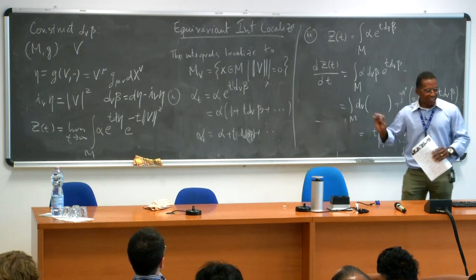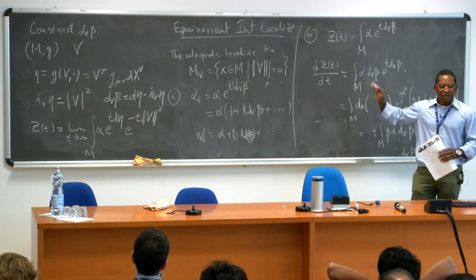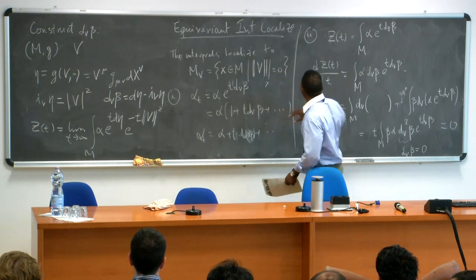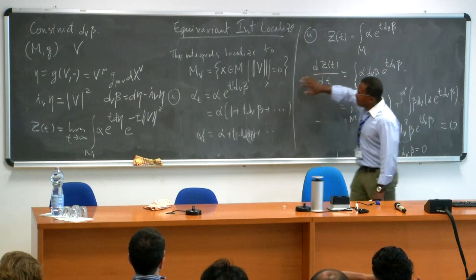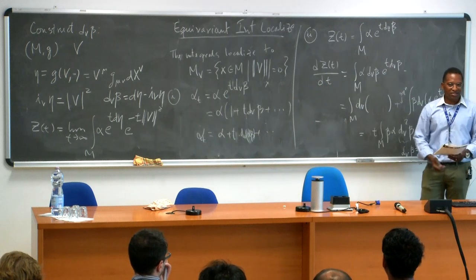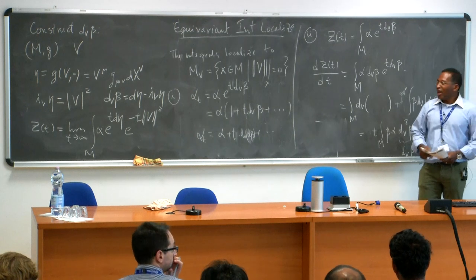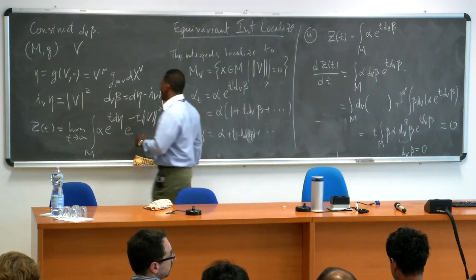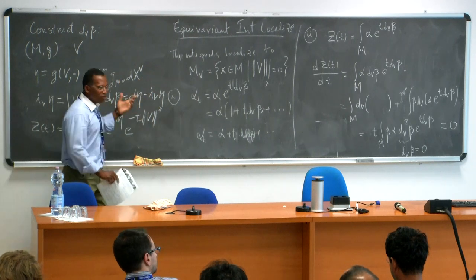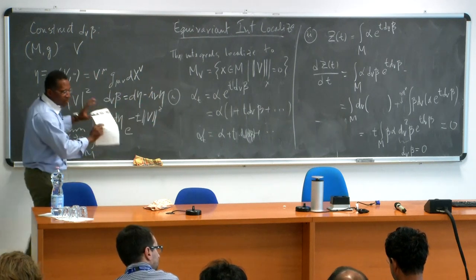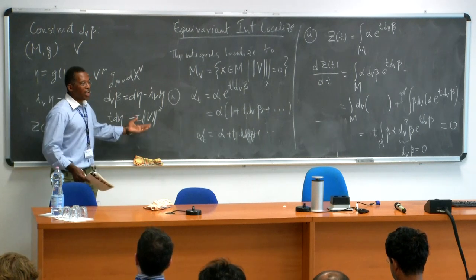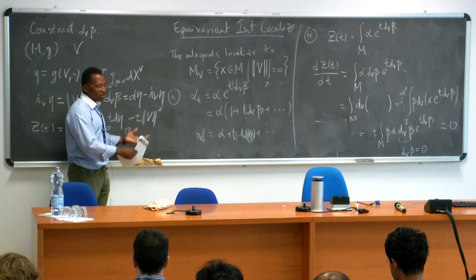Equivariant integrals localize; there are many more things to do — I did the abelian case and one can go to non-abelian. This shows that equivariant integrals localize to the locus where the norm of the U(1) action vanishes. Regarding the abelian assumption: I used only one vector. With many vectors, the integral localizes to the intersection of all points where each vector's norm vanishes.